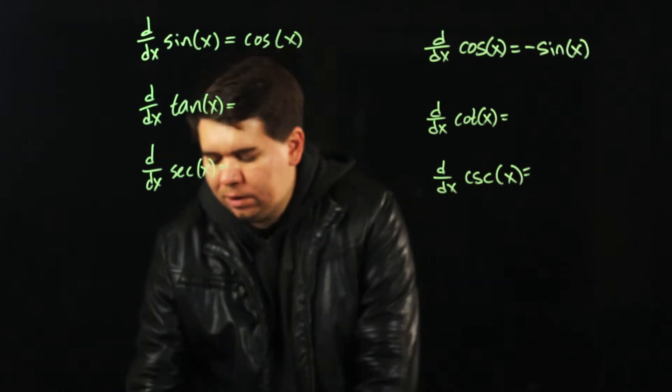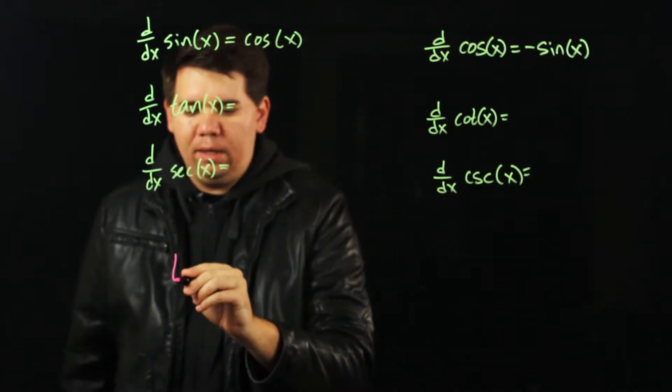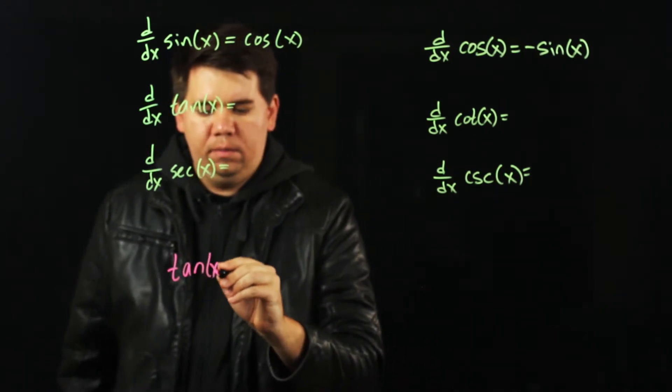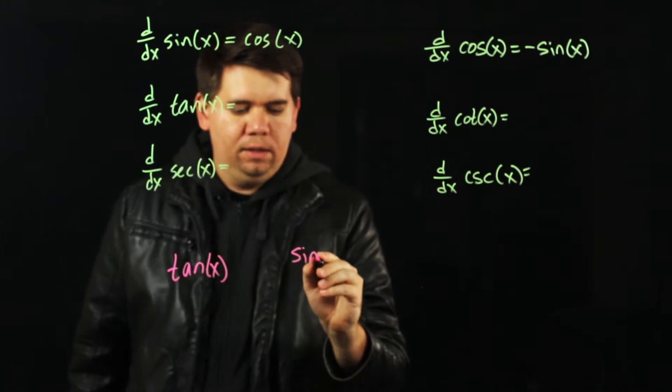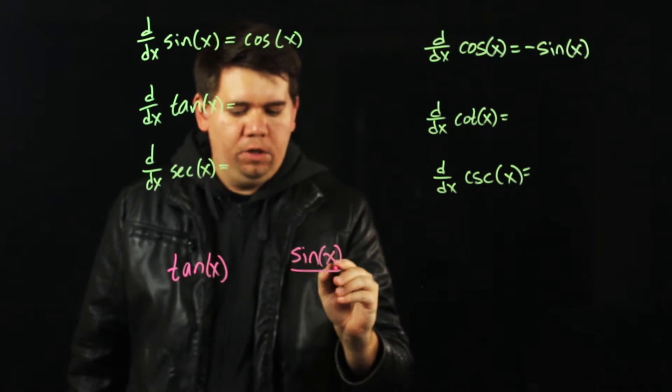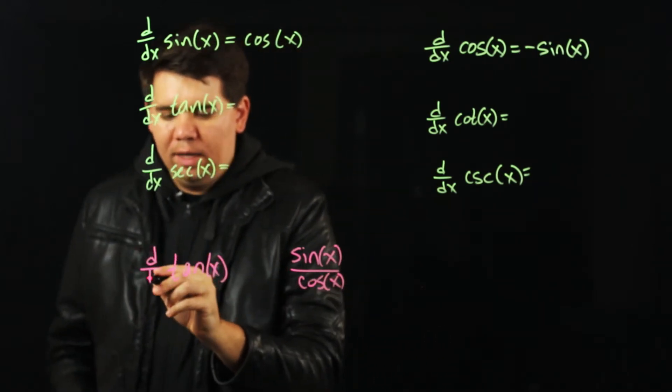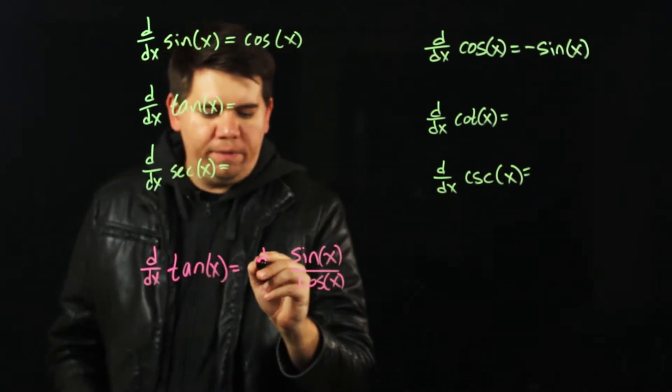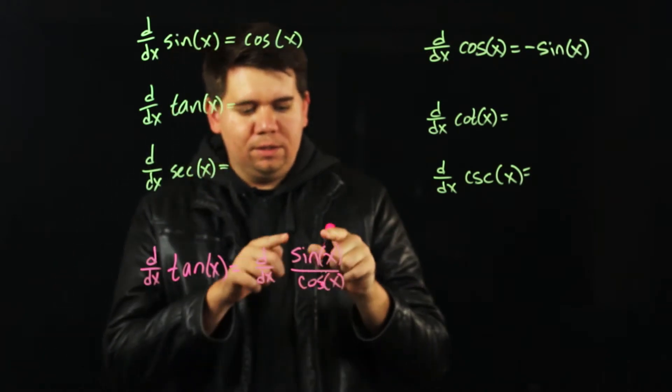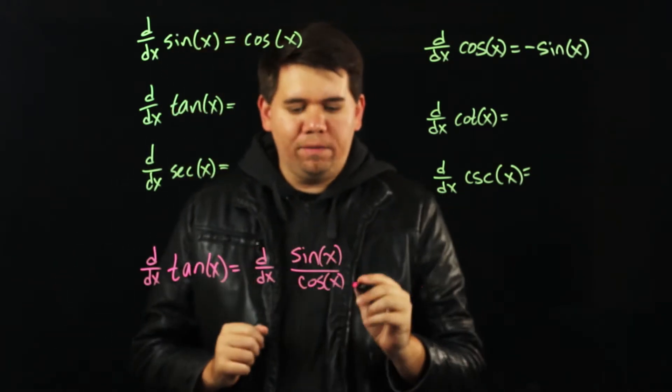For example, tangent is just defined to be sine divided by cosine. So instead of calculating the derivative of tangent of x, I can think about it as calculating the derivative of this quotient, sine of x divided by cosine of x.